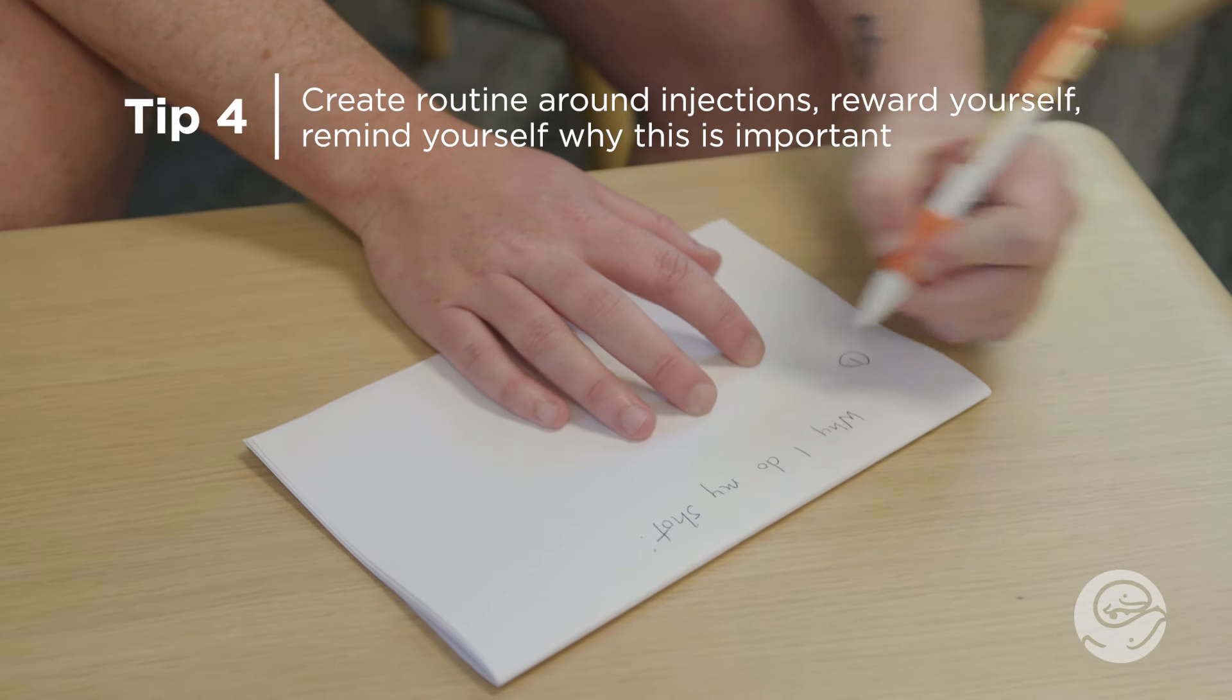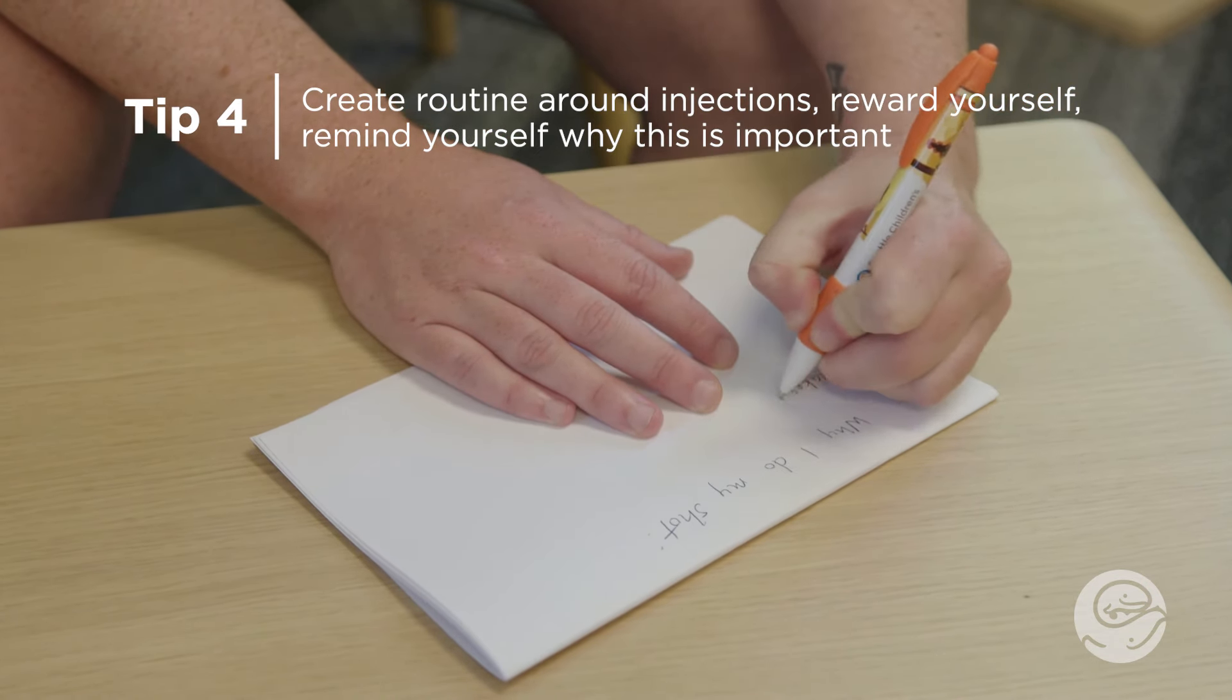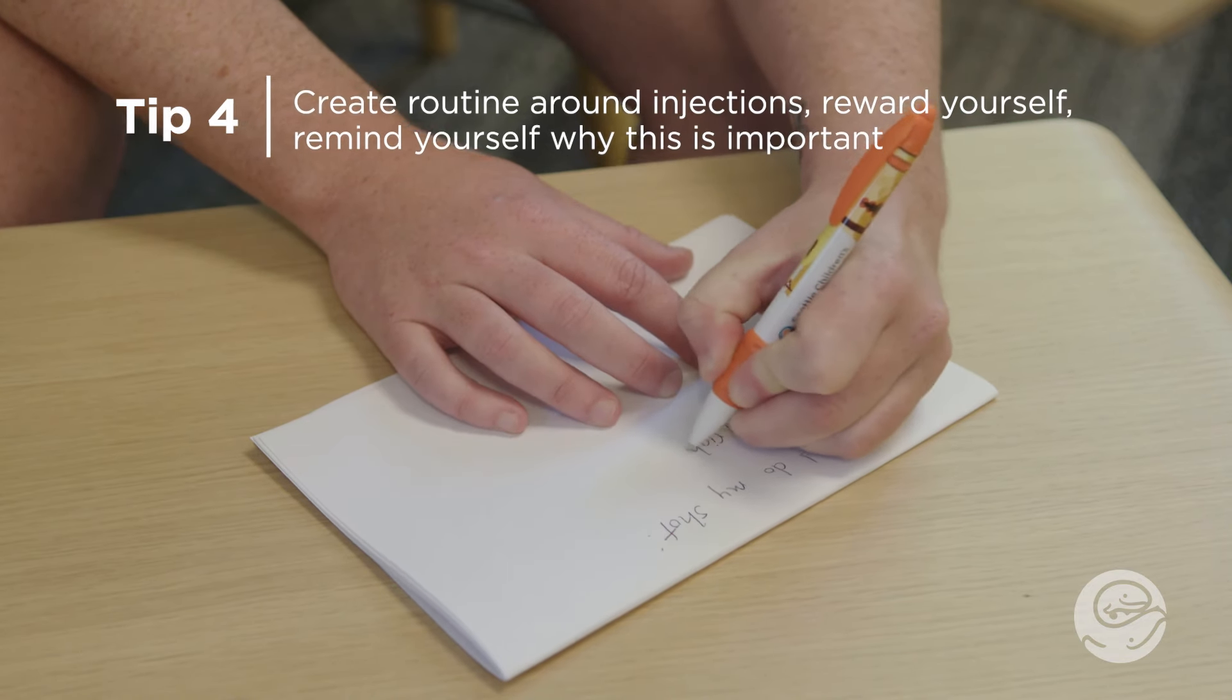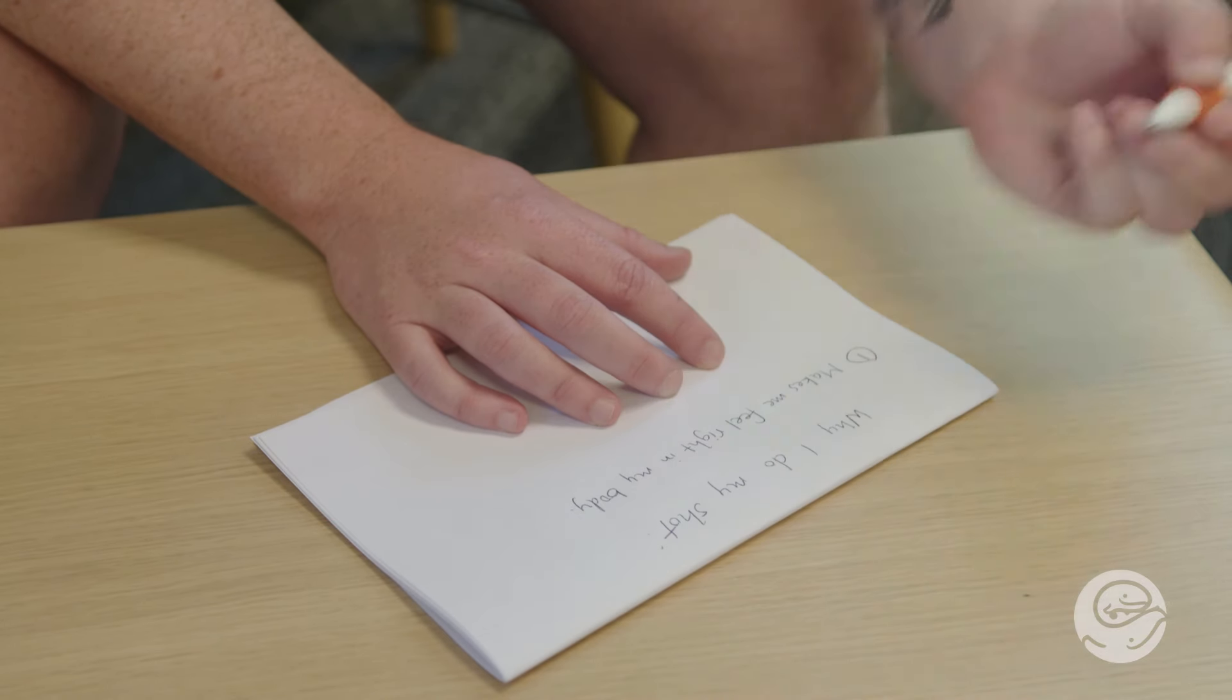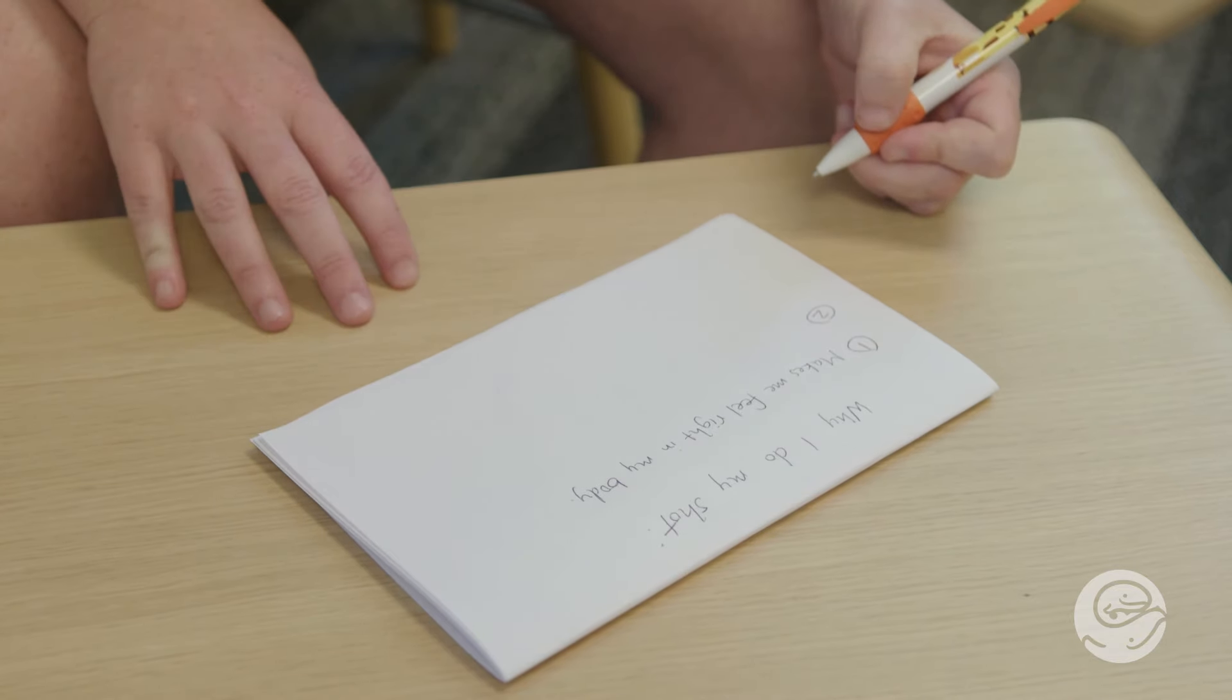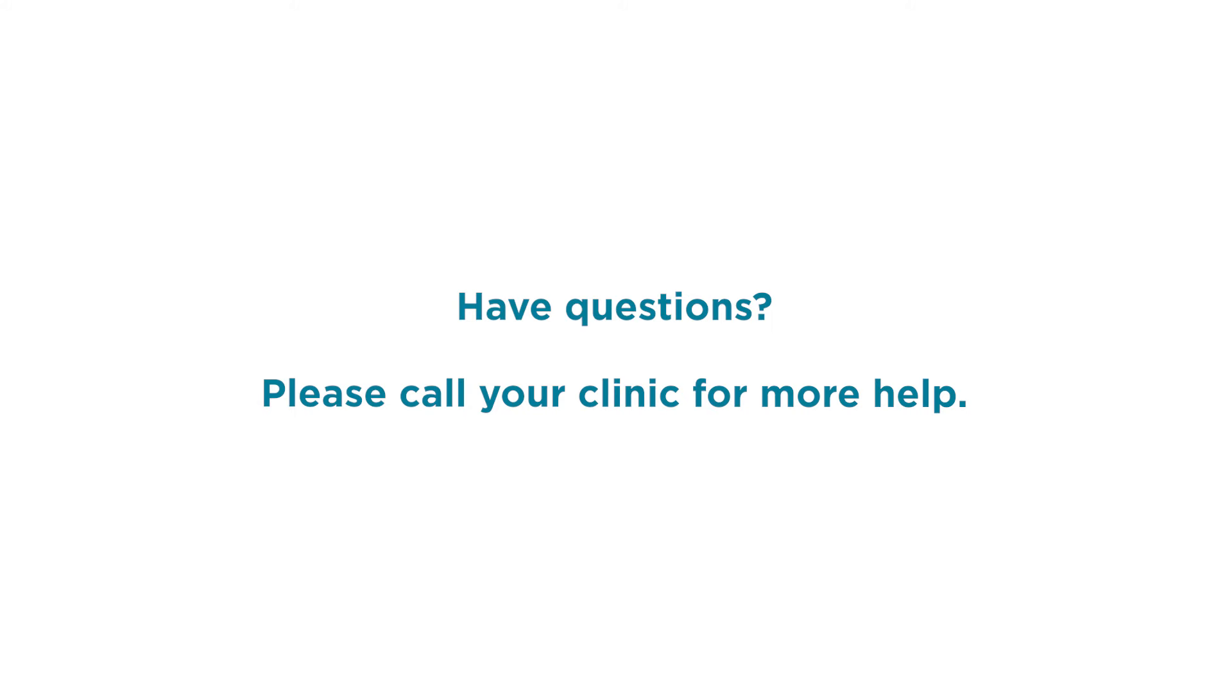Tip 4. Create a routine around your injections. Do something that calms you like listening to music, having a show on in the background, giving yourself a reward afterwards, reminding yourself why you are doing these injections. Deep breathing can also be helpful to calm yourself. Do the poke part of the injection on a breath out. If you have questions about how to give your injection, if you are having trouble getting the correct supplies, or are experiencing anxiety that is making it difficult to take your medicine, please contact your clinic for more help.